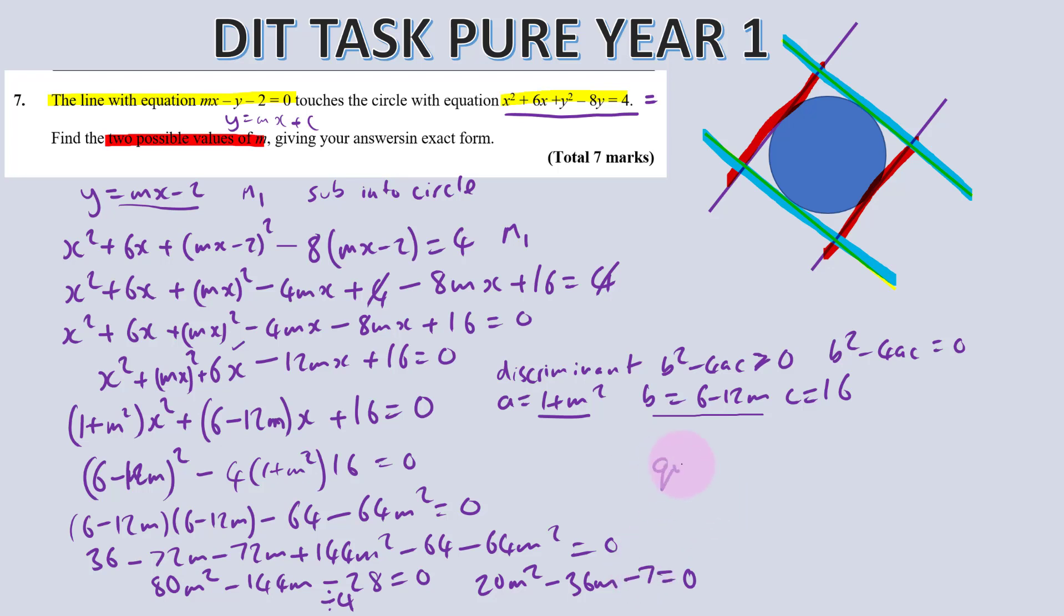We've got 144 minus 64, so that's 80m squared minus 144m minus 64 add 36, so that's minus 28 equals 0. Can we simplify that? What number goes into that? 4. So we can divide this all by 4. That gives us 20m squared minus 36m minus 7 equals 0. That looks like it's going to be difficult to factorize. So I'll use the quadratic formula.